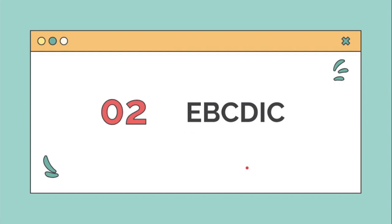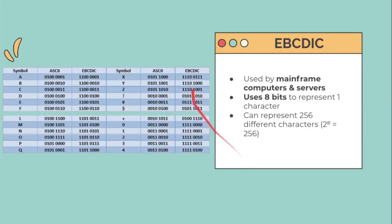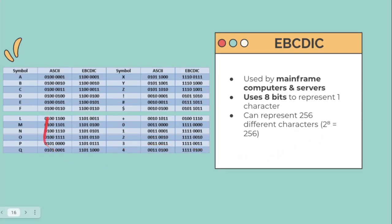Next is EBCDIC, used by mainframe computers and servers. It also uses 8 bits to represent one character, so it can represent 256 different characters, just like ASCII. However, it has a different number set. For example, the ASCII code for 'A' is 01000001, while EBCDIC uses a completely different code point for 'A'.